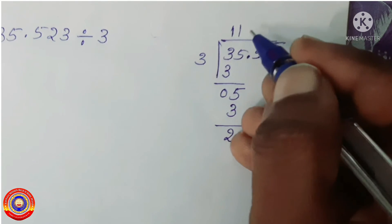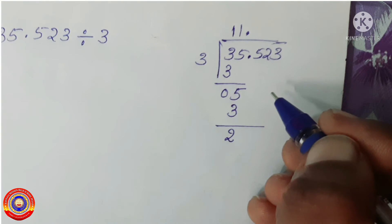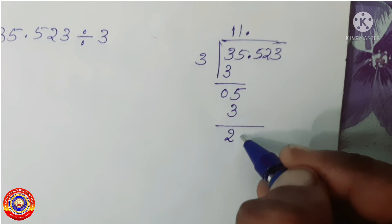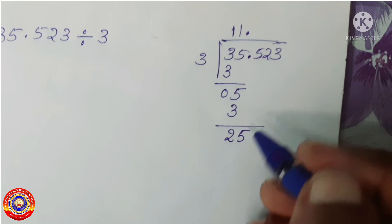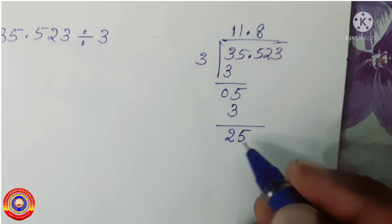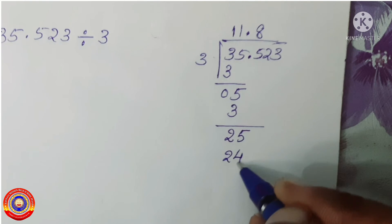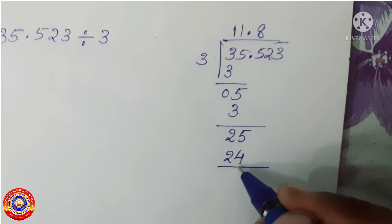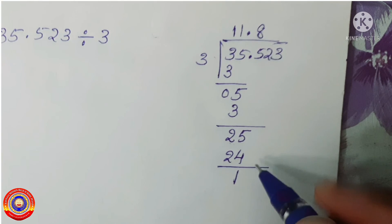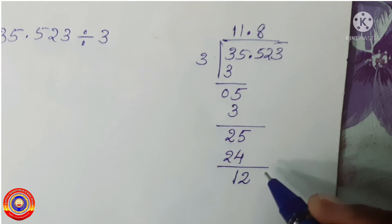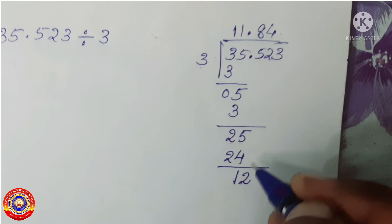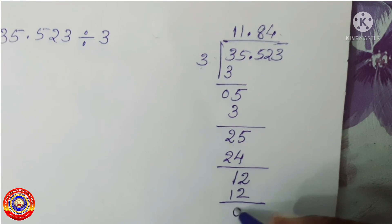Next, we have to bring down the number in the tenth place. Before that, we have to put the decimal point in the quotient. Then take the number in the tenth place — 2 will become 25. And 25 divided by 3 is equal to 8. Then 3 multiplied by 8 is equal to 24, and 25 minus 24 is equal to 1. Next, bring down the number in the hundredth place — 1 will become 12. Then 12 divided by 3 is equal to 4. 3 into 4 is equal to 12, and 12 minus 12 is equal to 0.